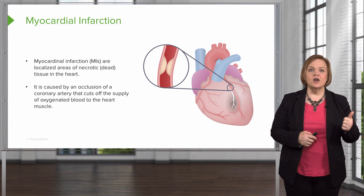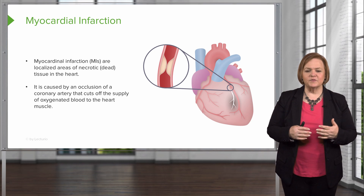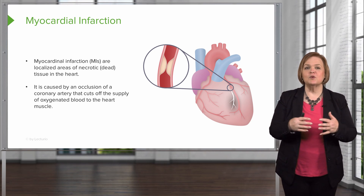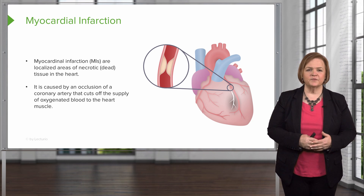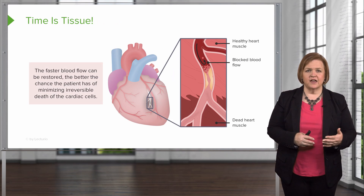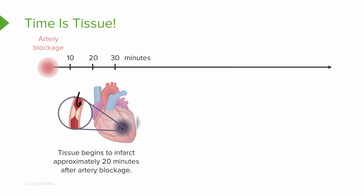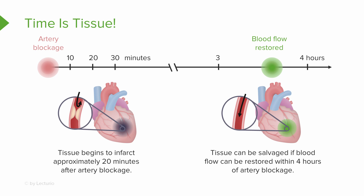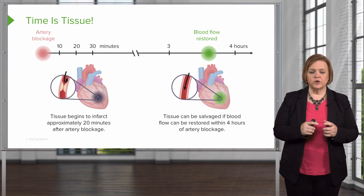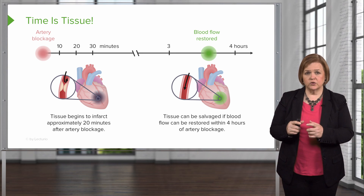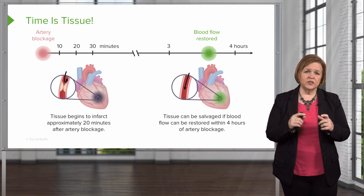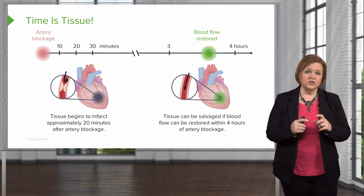With anything — a stroke or a heart attack — time is tissue. The faster we can reestablish blood flow, the better chance we have of minimizing irreversible cell death. It usually takes about 20 minutes of the artery being blocked for tissue to begin to infarct. We have about a four-hour window from the onset of symptoms when tissue can still be salvaged. If you've heard about thrombolytics, they must be administered within that four-hour window from symptom onset — because if we restore blood flow in time, that tissue is more likely to be saved.